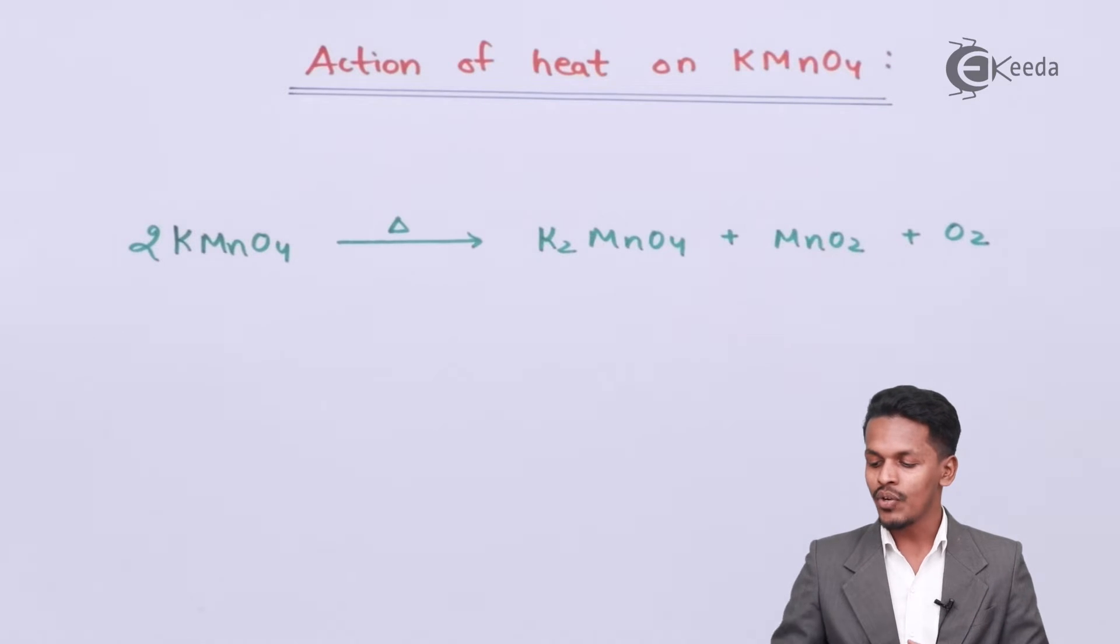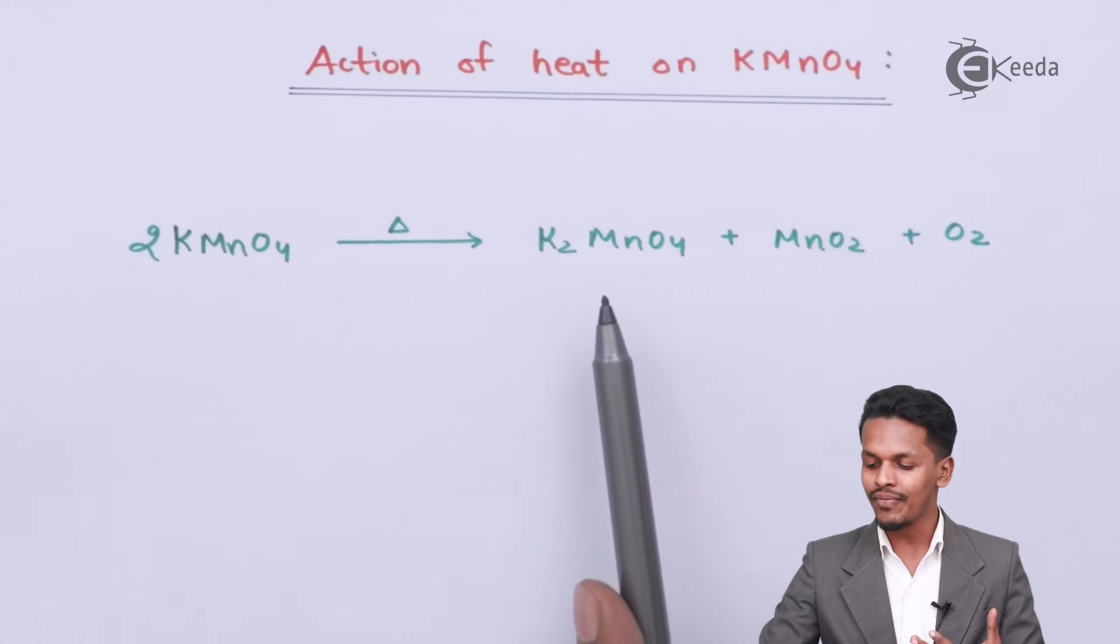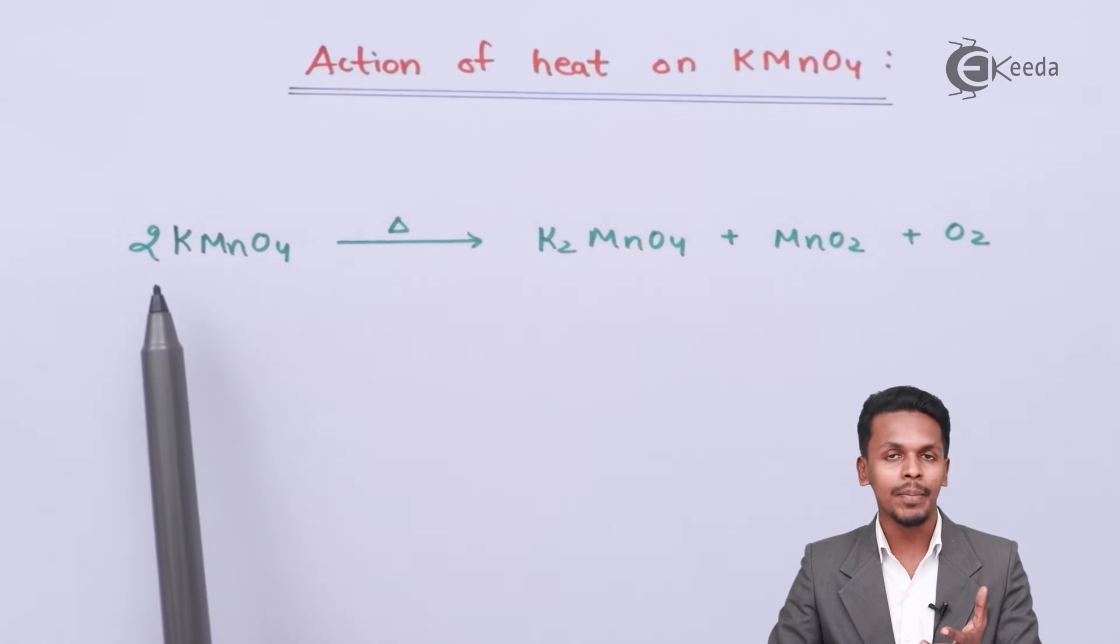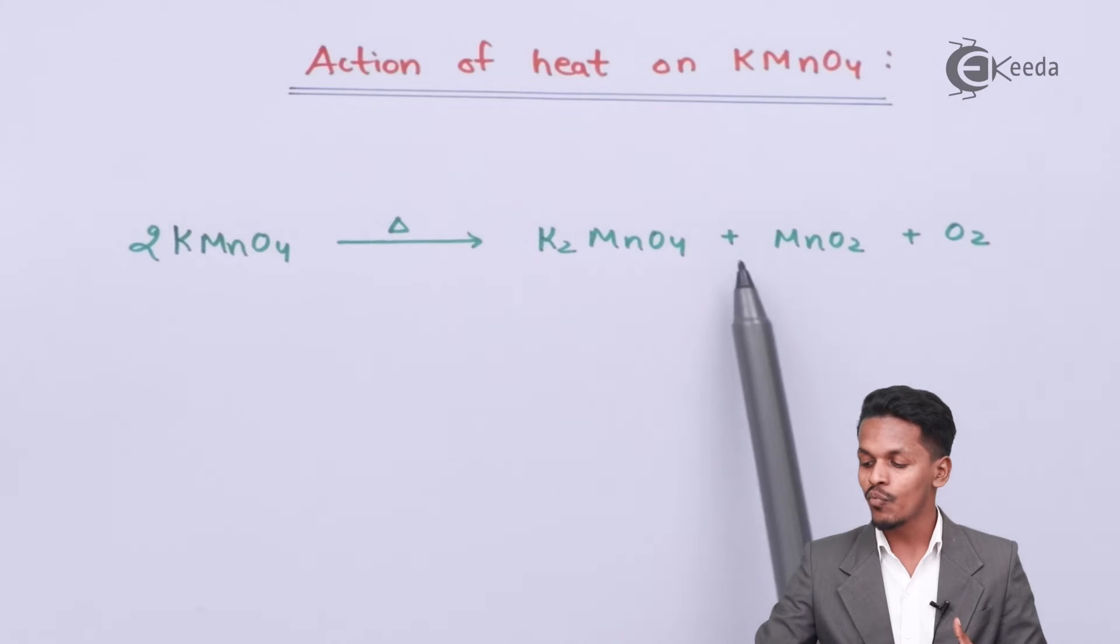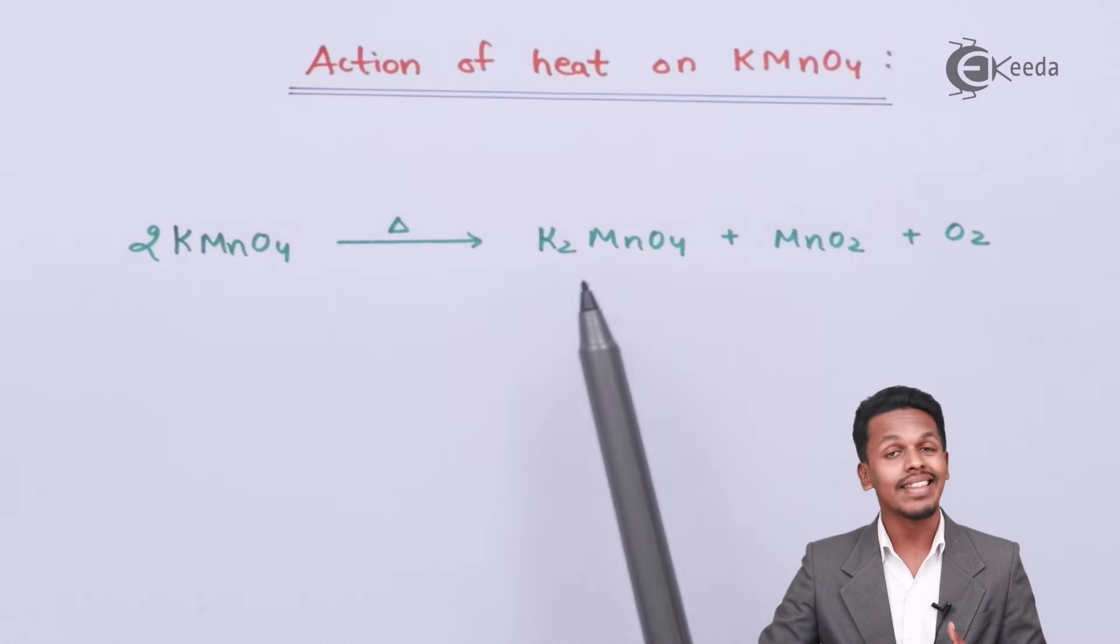Therefore, this decomposition converts potassium permanganate to potassium manganate. This K2MnO4 is what we have got as a byproduct.